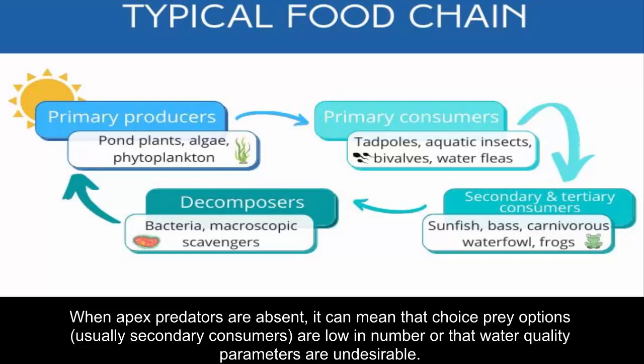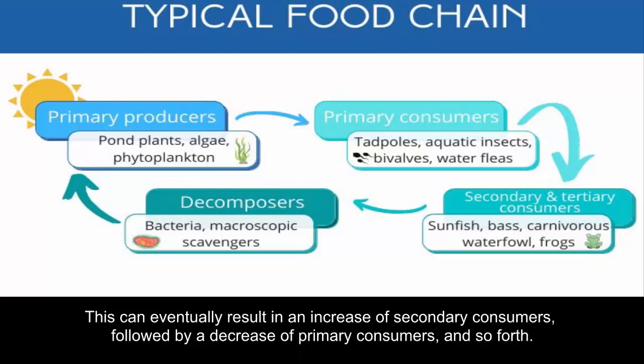When apex predators are absent, it can mean that choice prey options — usually secondary consumers — are low in number, or that water quality parameters are undesirable. This can eventually result in an increase of secondary consumers, followed by a decrease of primary consumers, and so forth.